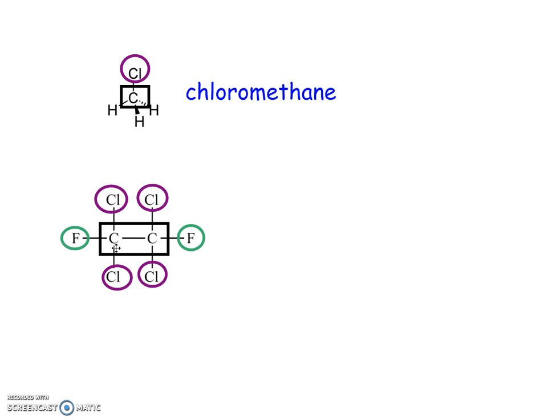Now if we start at the left, we've got carbons 1, 1, 1, 2, 2, 2. If we start at the right, 1, 1, 1, 2, 2, 2. So for this one it doesn't matter which side I start at, but we do need to be consistent. So the chlorines are coming off of carbon number 1, carbon number 1, carbon number 1, carbon number 2, and carbon number 2.